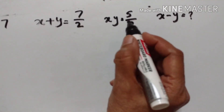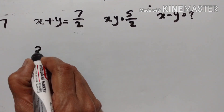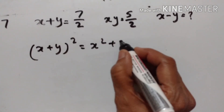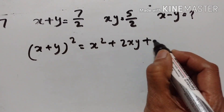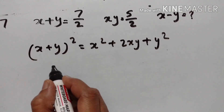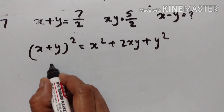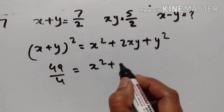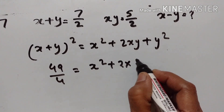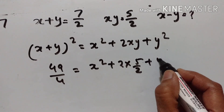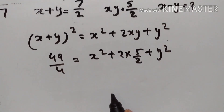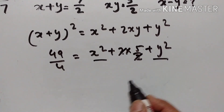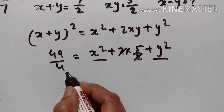Next problem: X + Y = 7/2, XY = 5/2. Using (X+Y)² = X² + 2XY + Y²: (7/2)² = 49/4 = X² + 2×(5/2) + Y². So X² + Y² = 49/4 − 5.